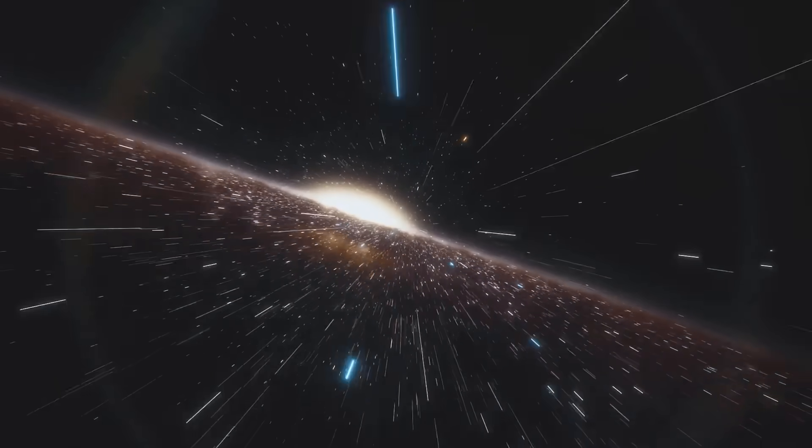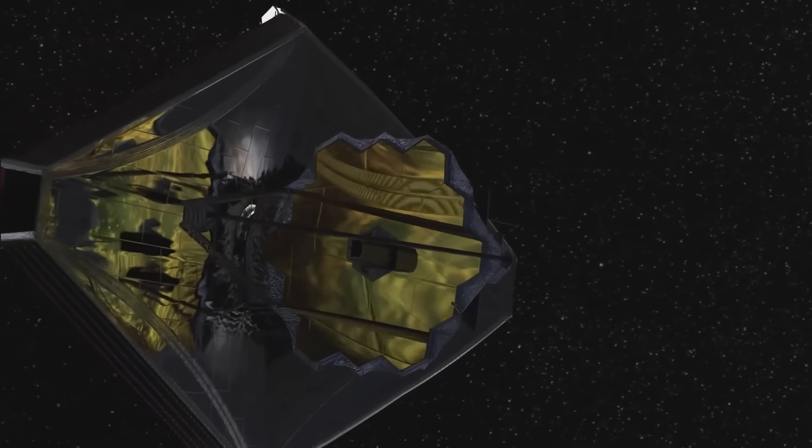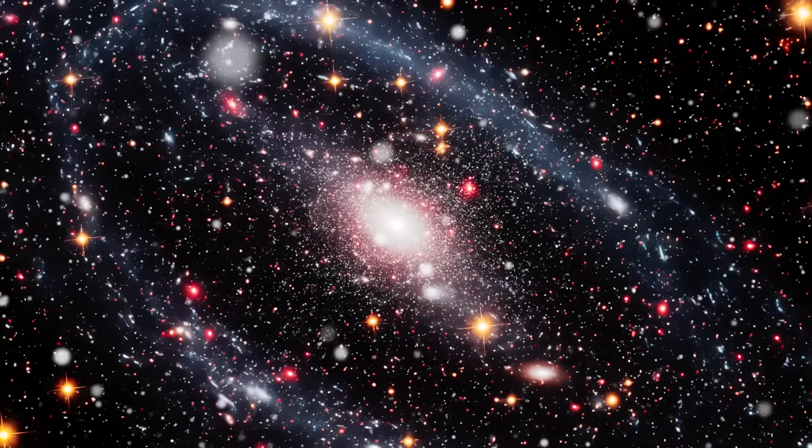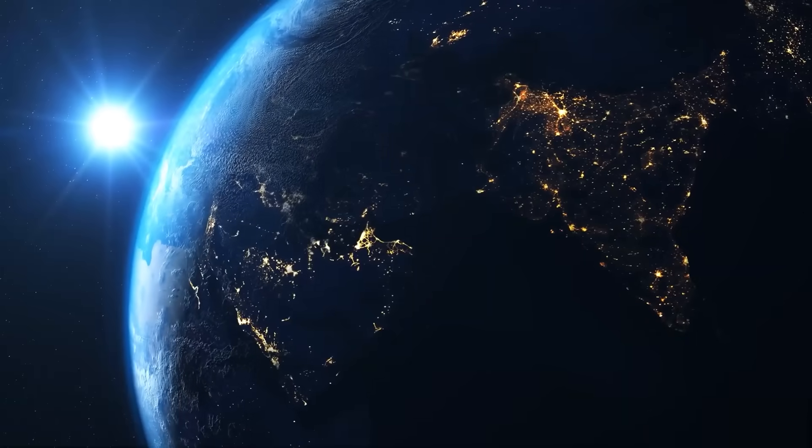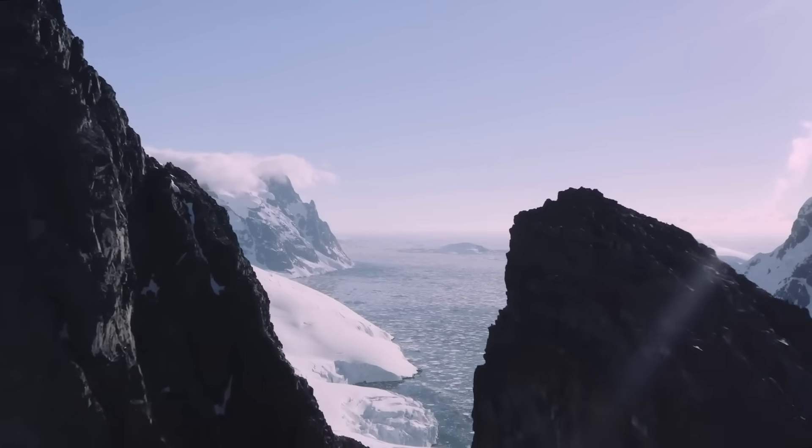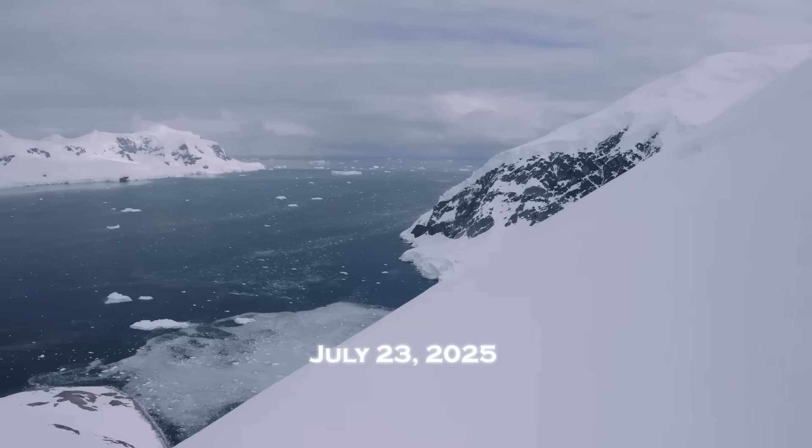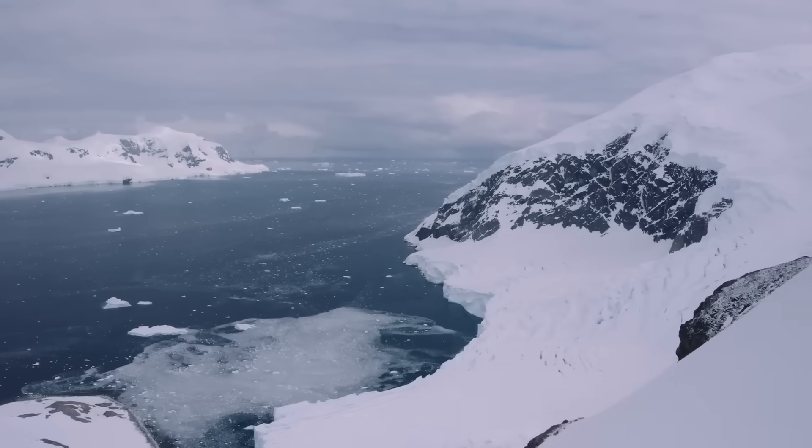Buried deep within the AI's output logs was a set of coordinates. A simple string of numbers, longitude, latitude, and time. At first glance, it looked like just another anomaly. But when an astronomer ran the numbers through a classical simulation, chills ran through the room. The coordinates pointed not to a location in space, but to a date and place on Earth. Specifically, a remote region in the Arctic Circle. And the date? July 23rd, 2025. Just weeks away.